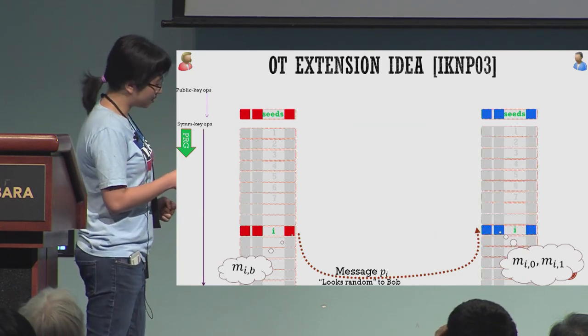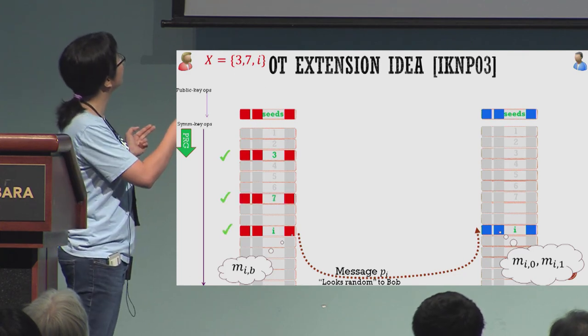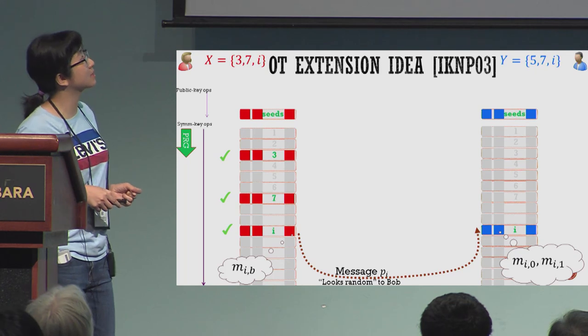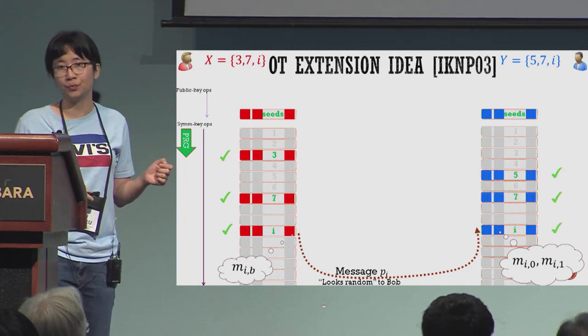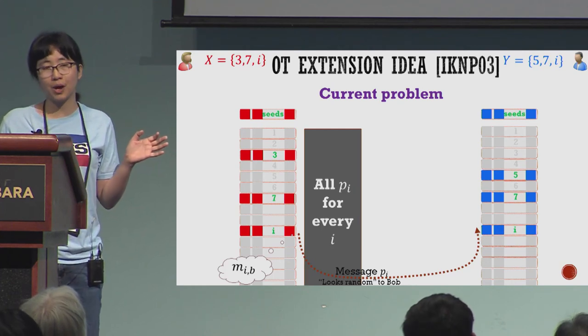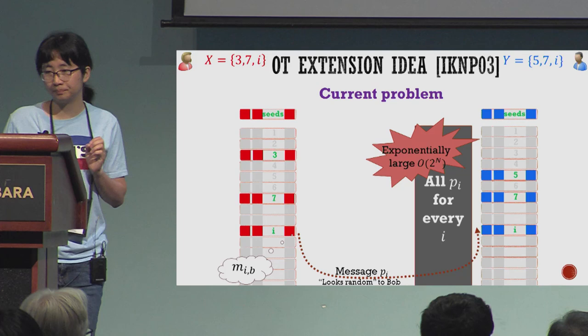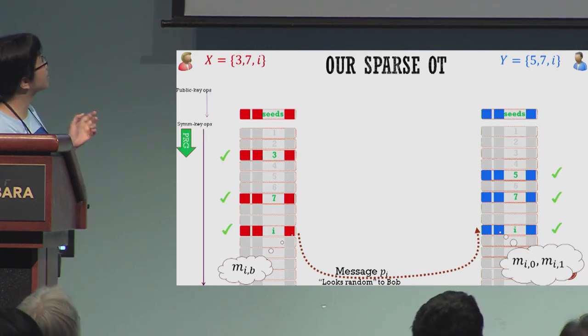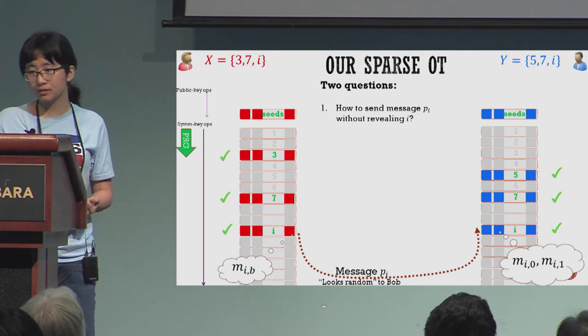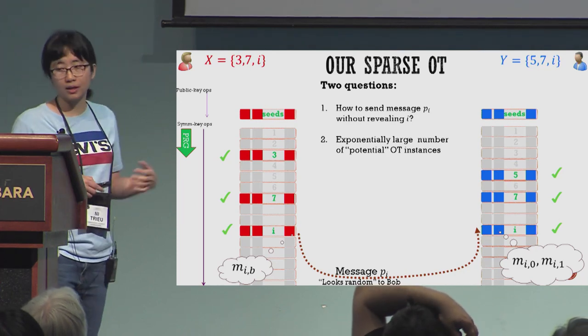Now, for example, if Alice has numbers 3, 7, and i, she only cares about the red values here: number 3, number 7, and number i. Similarly, if Bob has numbers 5, 7, and i, he only cares about the blue values. If you use the current OT extensions, you have to send all the Pi values for every item i in the domain, and this is expensive, so we want to avoid it. So we have two questions: how to send Pi without revealing i, and second, we generate many OTs but we only care about some of them.